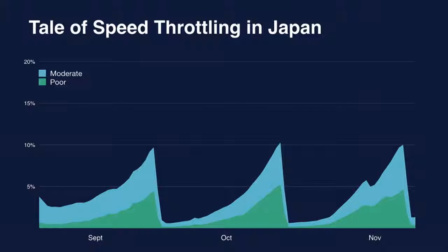This is a talk about tails — things we find out that might not be obvious. If you thought about Japan, you'd think about good connections for most users. But when we looked at the data, we found that at the end of every month, about 10% of users in Japan switch from excellent connections to poor and moderate connections. We think users are either on prepaid plans or throttled by their carrier when they use too much data. So if you're just looking at the country or connection type, you're missing a group of the population that doesn't fit the profile.